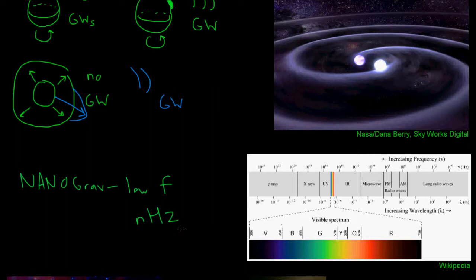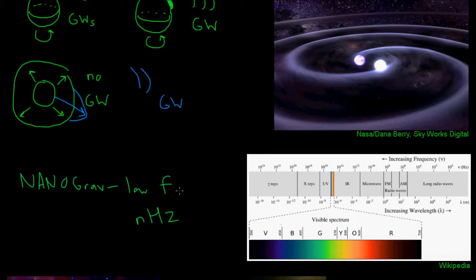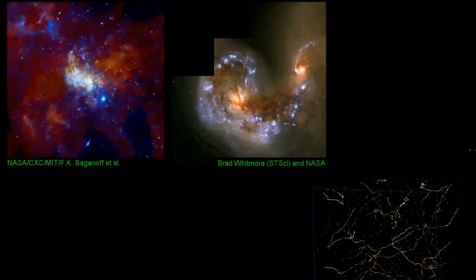These nanohertz frequencies correspond to periods of months to years — so this is very, very low frequency gravitational waves. This means that some sources, like the spinning neutron stars and supernovas, are going to emit gravitational waves at too high a frequency for NanoGrav to be able to detect, and we're going to need different methods for measuring those. However, NanoGrav will be able to detect low frequency gravitational waves that can't be observed by any other known methods.